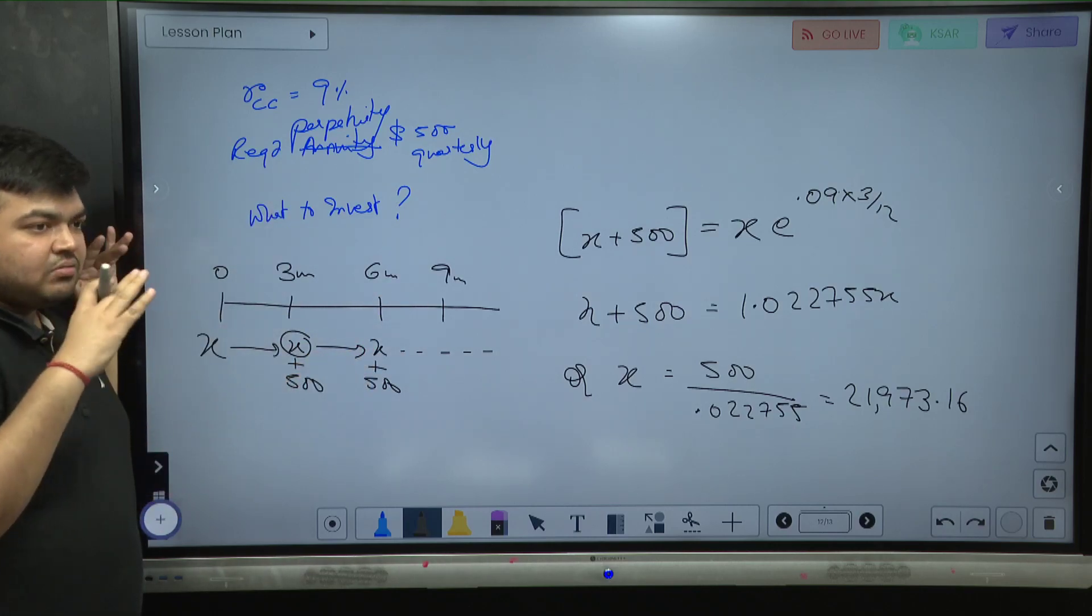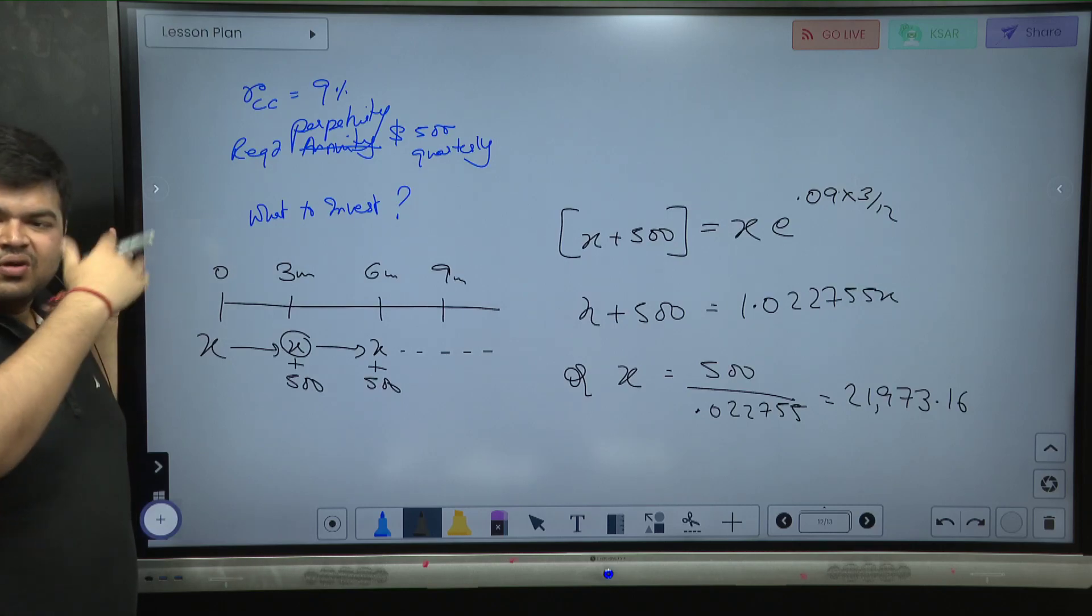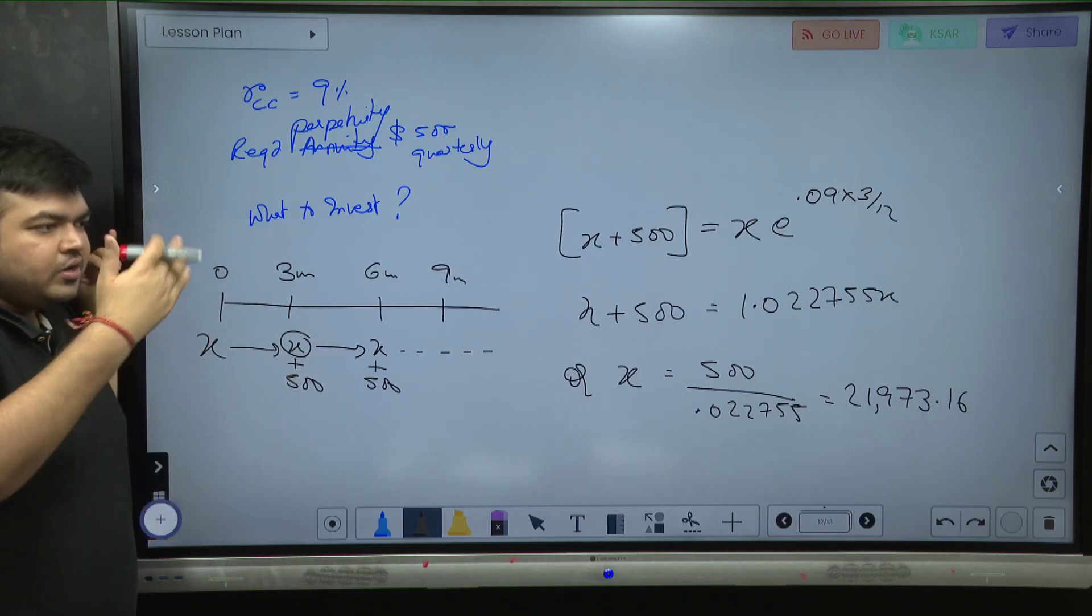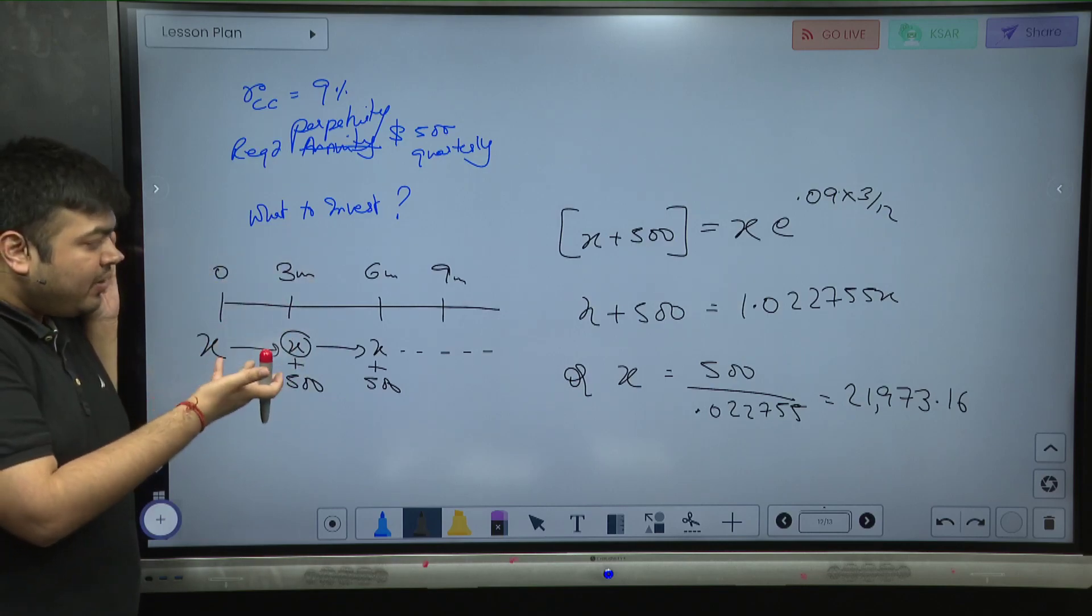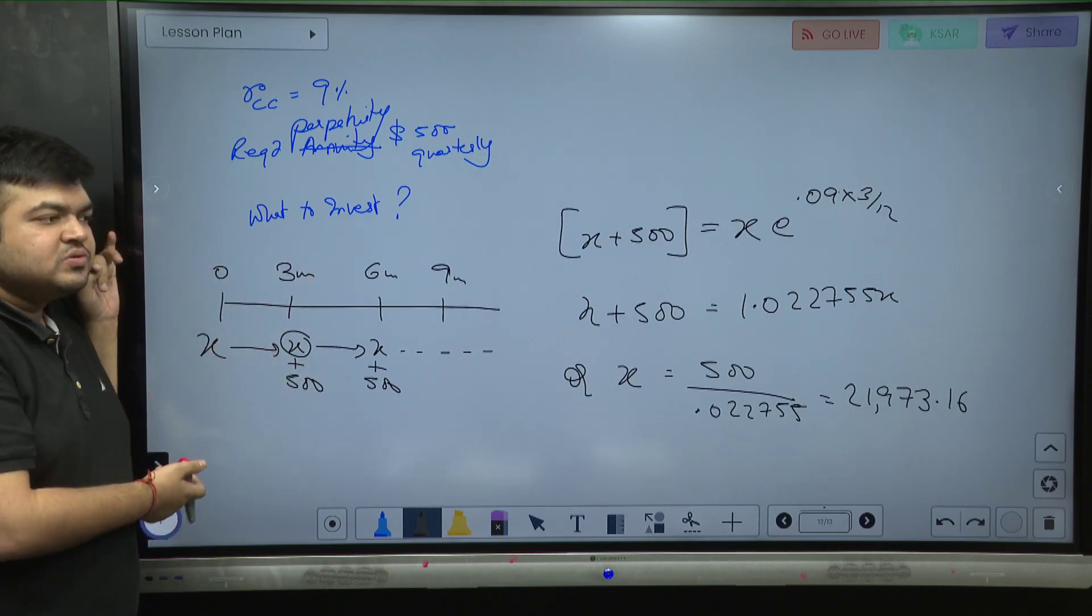But if I do not want to mug up the formula or just convert mechanically from continuous to EAY to quarterly and then do the sum applying the formula, I want to know the logic also. Why can't I do it this way?